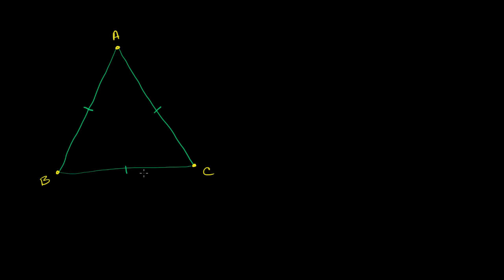What we've got over here is a triangle where all three sides have the same length, or all three sides are congruent to each other. A triangle like this we call equilateral. What I want to do is prove that if all three sides are the same, then we know that all three angles are going to have the same measure.